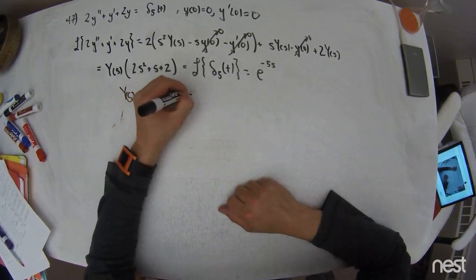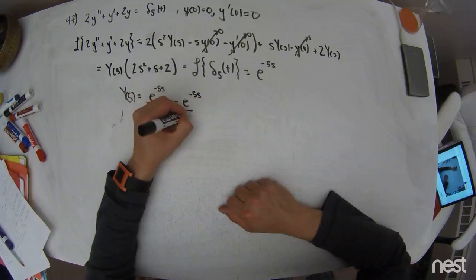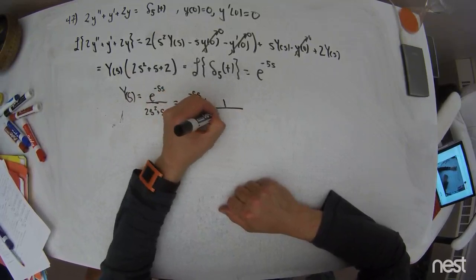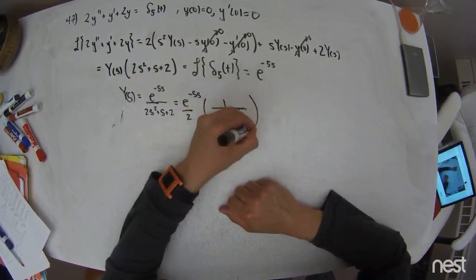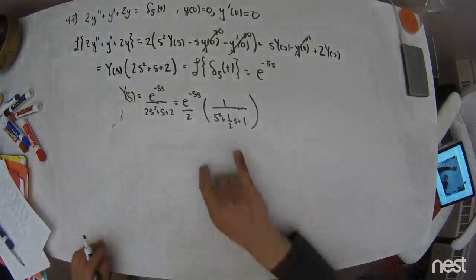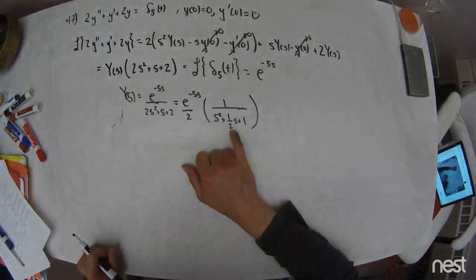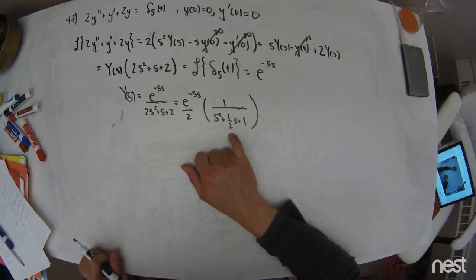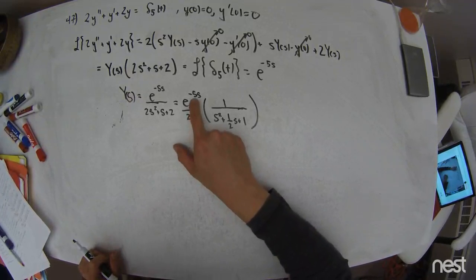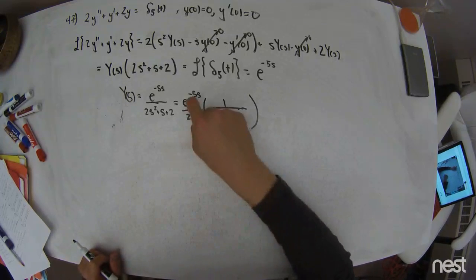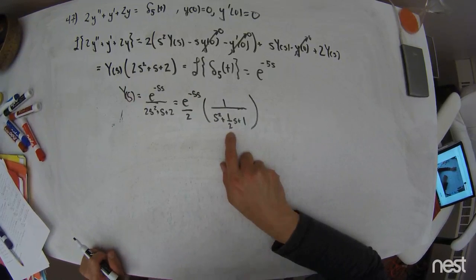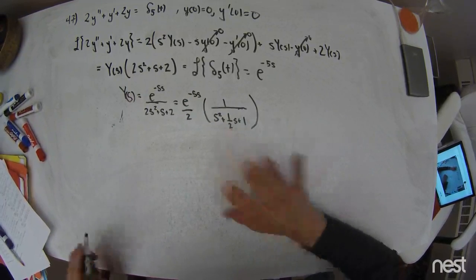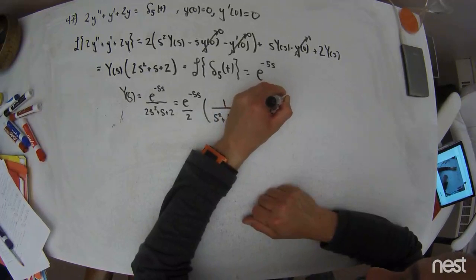Or e to the negative 5s over 2 times 1 over s squared plus 1 half s plus 1. So what we're seeing here is that the natural behavior, which is encoded into the characteristic equation, is being talked about being delayed in 5 seconds. So I've got to figure out what sort of solution. In this class, I taught e to the negative 5s.